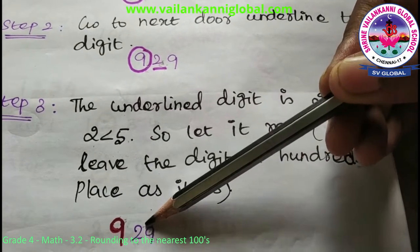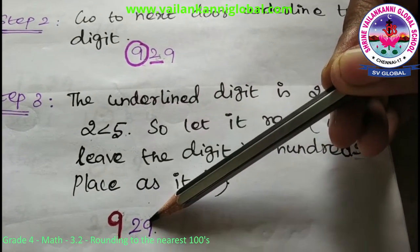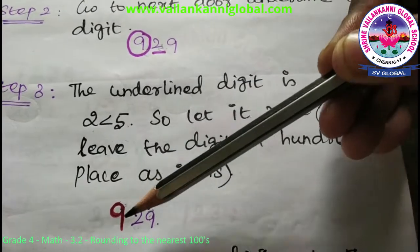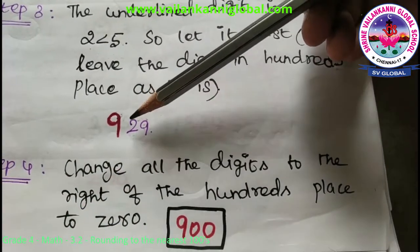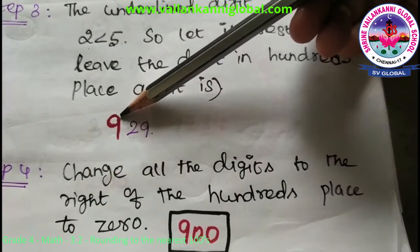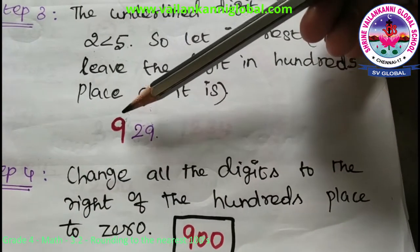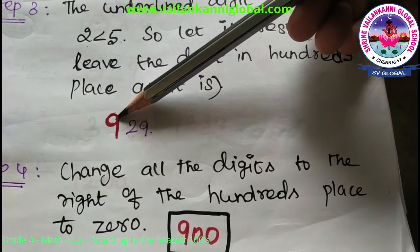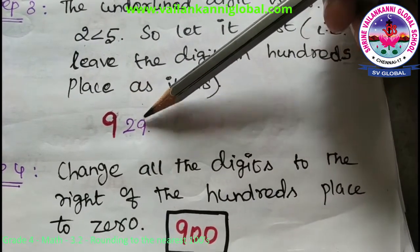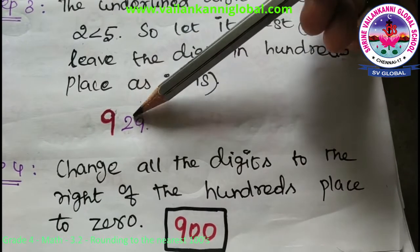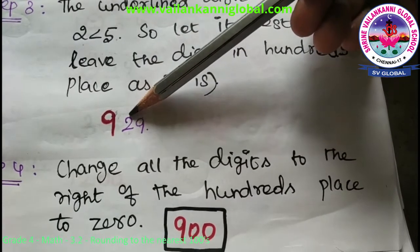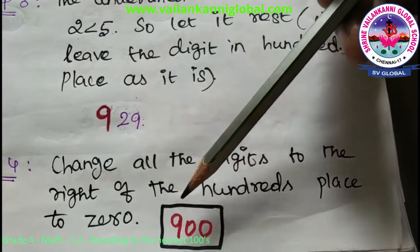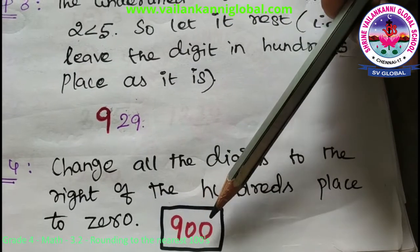So leave that hundreds place as it is and write 9. Then Step 4 is to change all the digits to the right of the hundreds place to zero. Here 2 becomes 0 and 9 also becomes 0, so the answer is 900.